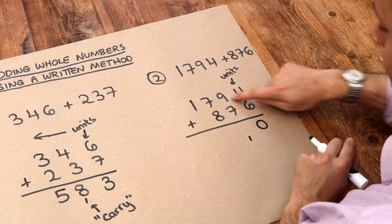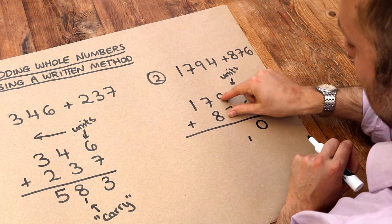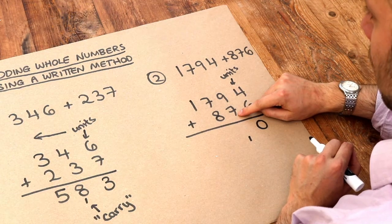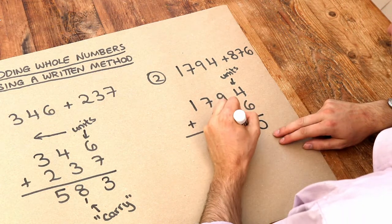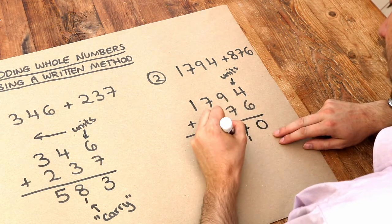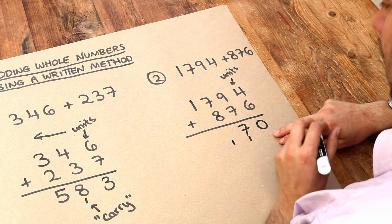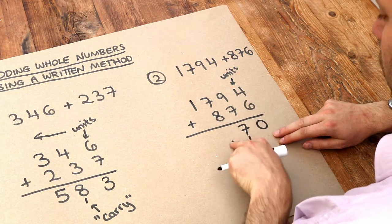We next do the 9 plus 7 in the next column to the left. 9 plus 7 is 16, plus that carry of 1 is 17. So we put the 7 here and again carry the 1, because in 17 the tens digit was 1.